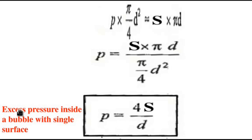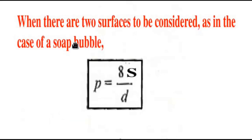So, here we have the case of a bubble with only a single outside surface. Now, if you consider two surfaces on the outside, one surface on the outside and the other on the inside, just as in the case of a soap bubble, the expression will change to p equals 8S divided by d.